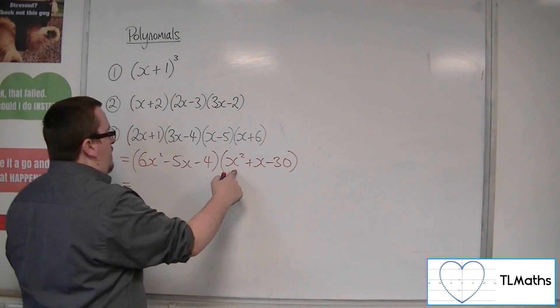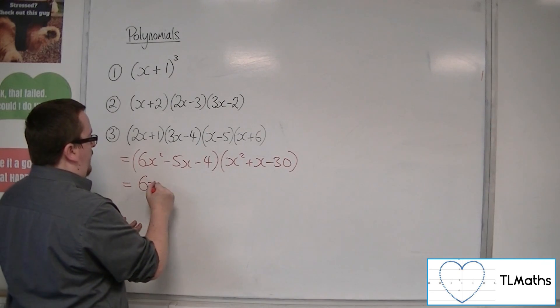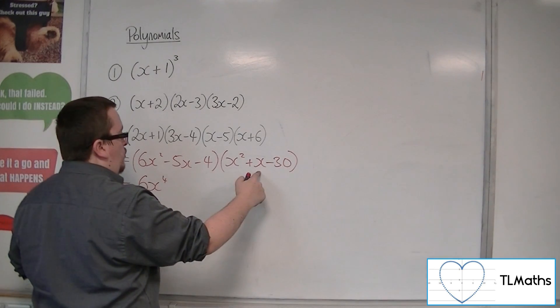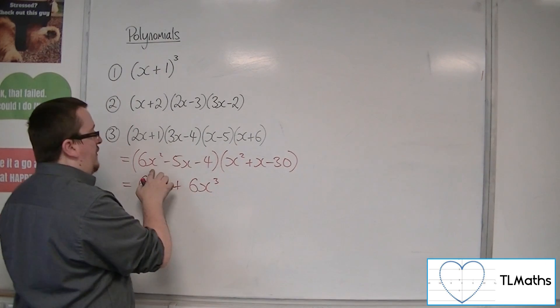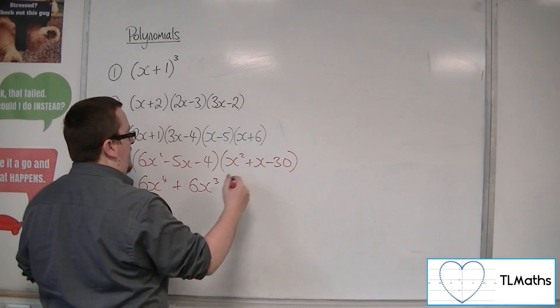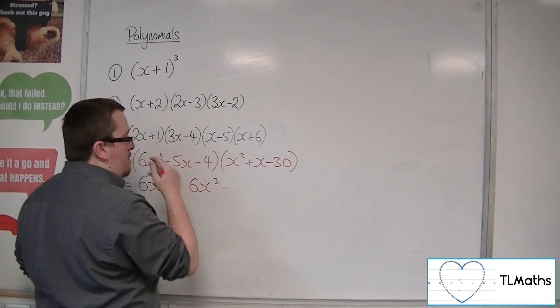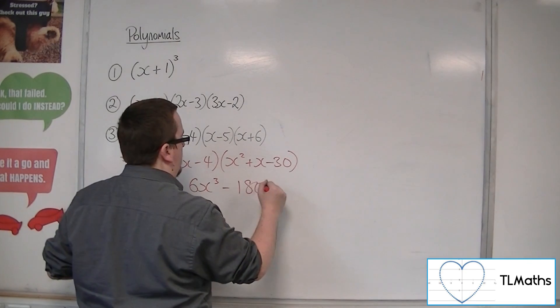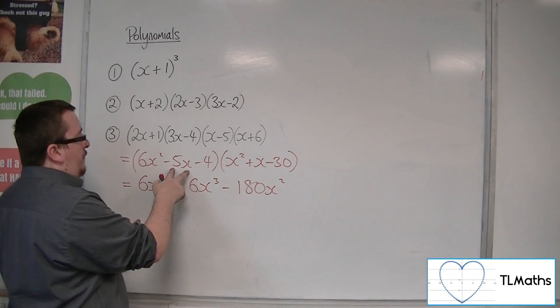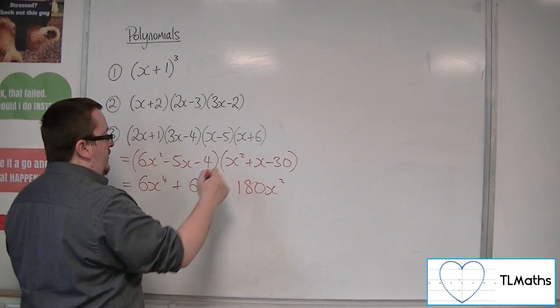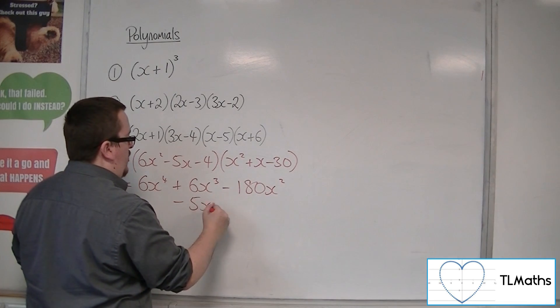6x² times x² is 6x⁴. Then 6x² times x makes 6x³. 6x² times -30 is -180x². Then we've got -5x times x², so -5x³.